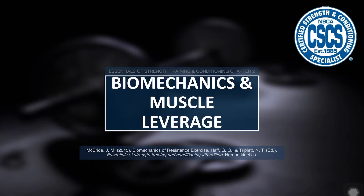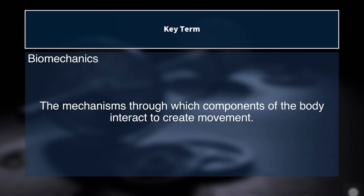We are in chapter 2 of the Essentials of Strength Training and Conditioning, and this chapter was written by Jeffrey McBride. So, biomechanics — what is biomechanics? Biomechanics refers to the mechanisms through which components of the body interact to create movement. Bio meaning life, mechanics meaning a machine — it's like the machine of life. How do we look at the human machine from both a kinetic and a kinematic point of view? Kinetic referring to the forces encountered and produced by the body; kinematic referring to the resultant movement of the body in space.